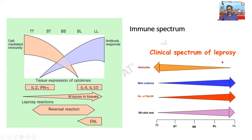What is the clinical spectrum of leprosy? In tuberculoid leprosy there is an increased amount of immunity which progressively decreases. Whereas in lepromatous leprosy, skin lesions are more, bacilli are more, and the skin test is also positive.